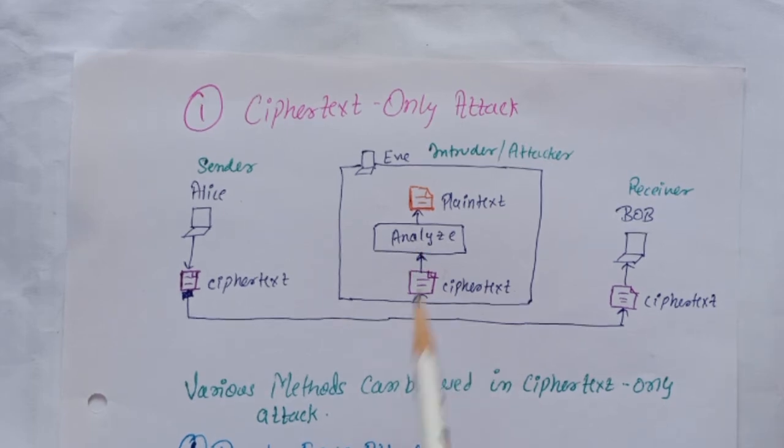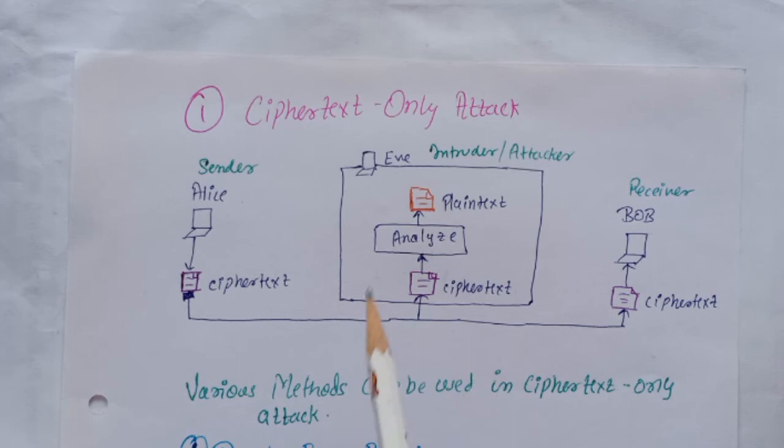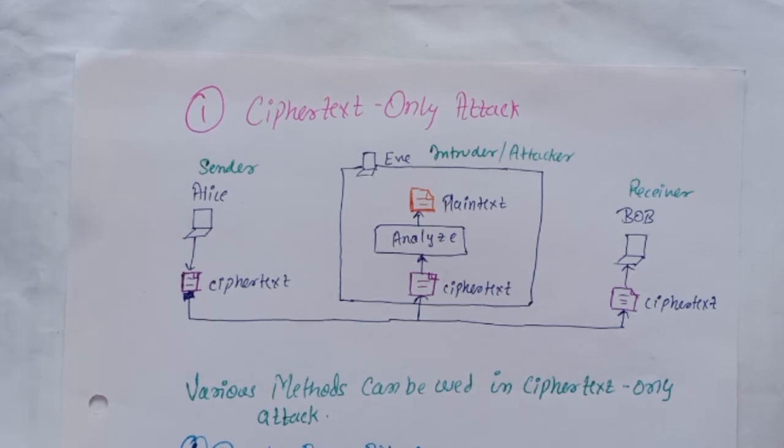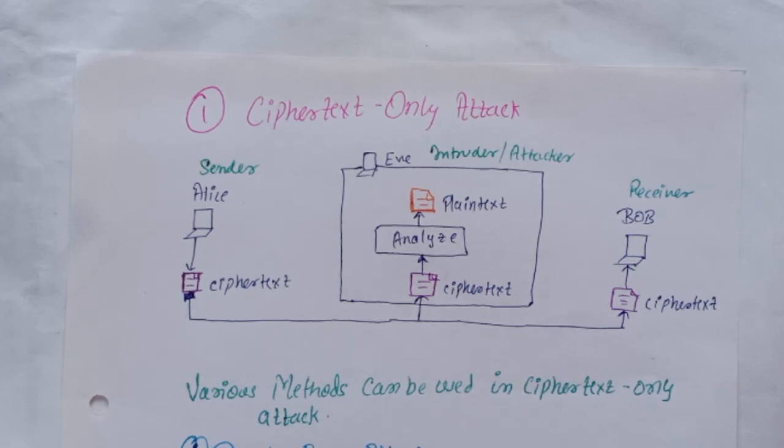Eve tries to find the corresponding key and the plain text. The ciphertext only attack is the most probable one because Eve needs only the ciphertext for this attack. To prevent the decryption of the message by the intruder, a cipher must be resistant to this type of attack.